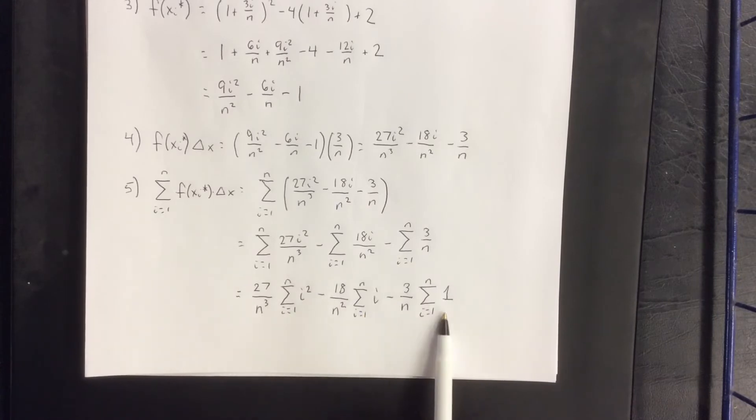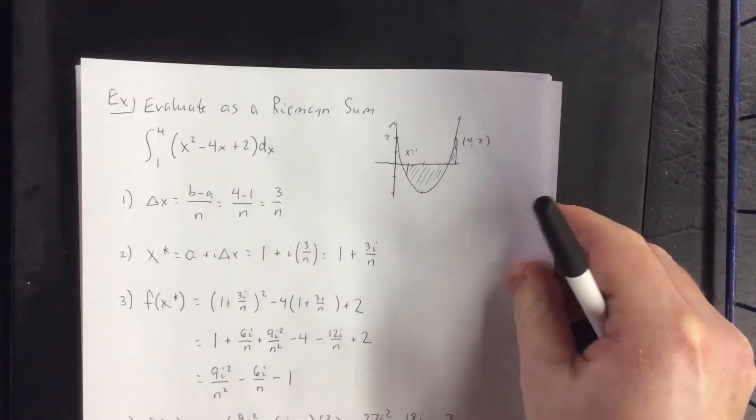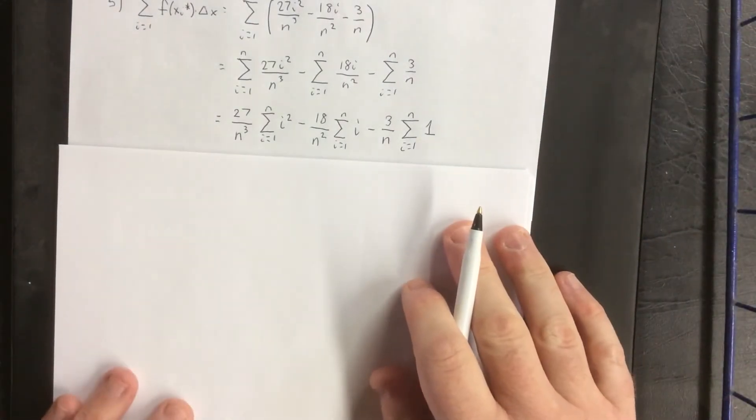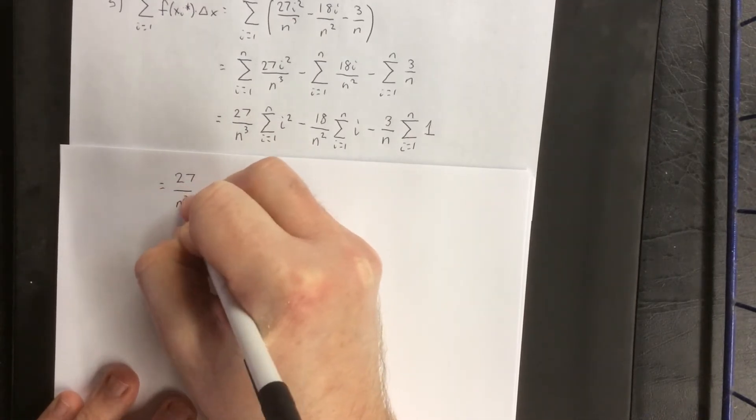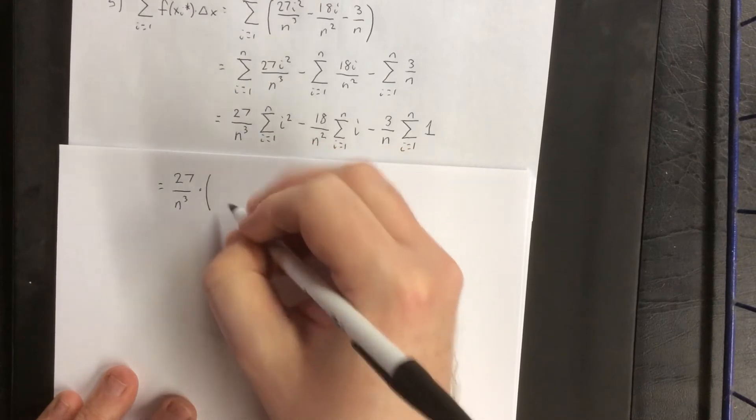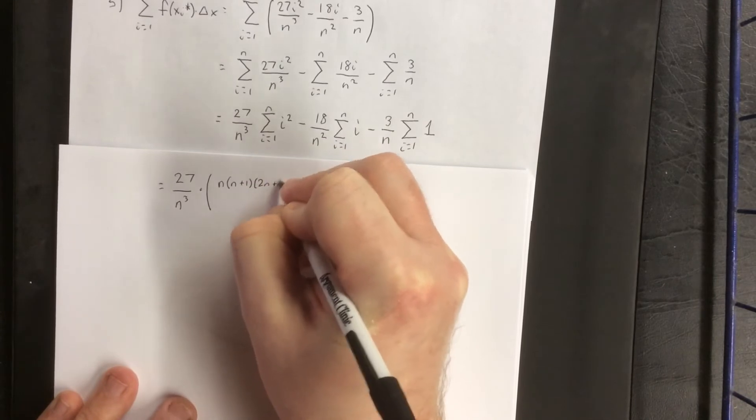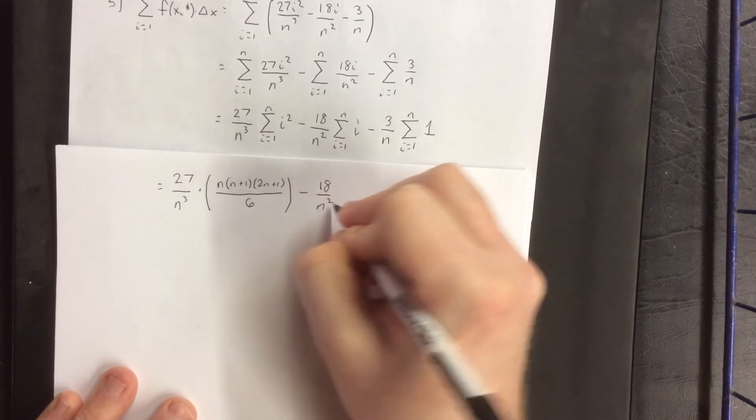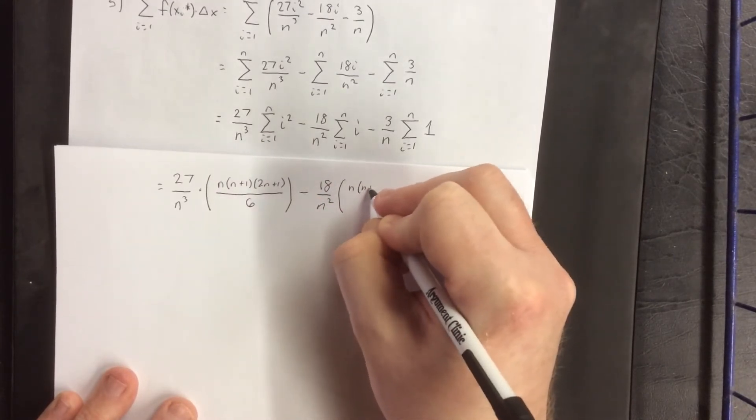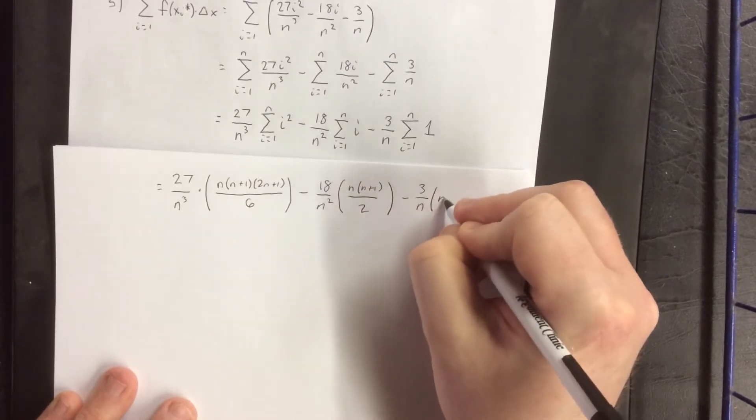All three of these have formulas from our first video of the playlist. I'm going to try to make this transition as seamless as possible to the next piece of paper. So this would be equal to 27 over n cubed times the summation of i squared from i equals 1 to n. The shortcut is n times (n plus 1) times (2n plus 1) all over 6. The summation for i is n times (n plus 1) all over 2. And the summation for any constant is that constant times n.